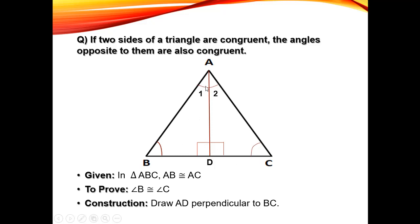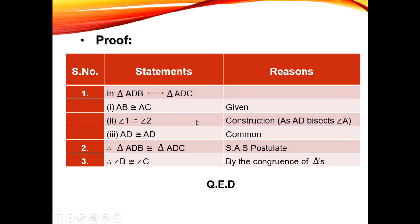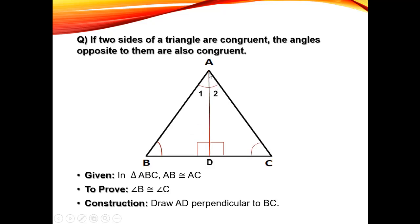So in triangles ADB and ADC, we have a second angle similarity. The third similarity is that AD is congruent to AD — it is common to both triangles. The vertical line drawn is the same segment in both. So we now have three matching elements: side AB ≅ AC, angle 1 ≅ angle 2, and side AD ≅ AD.